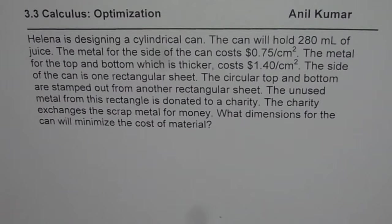Helen is designing a cylindrical can. The can will hold 280 milliliters of juice. The metal for the side of the can costs 75 cents per centimeter square. The metal for the top and bottom which is thicker costs 1.40 per centimeter square. The side of the can is one rectangular sheet. The circular top and bottom are stamped out from another rectangular sheet. The unused metal from this rectangle is donated to a charity. The charity exchanges the scrap metal for money. What dimensions for the can will minimize the cost of material.